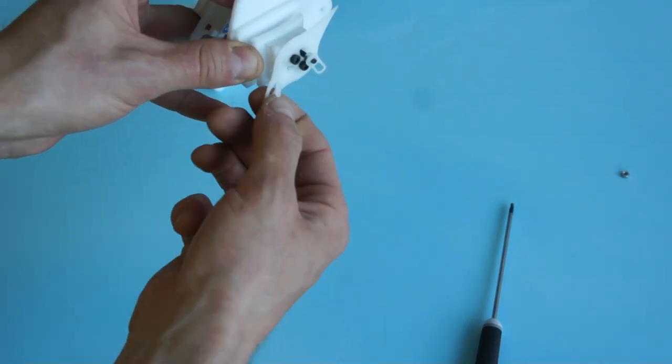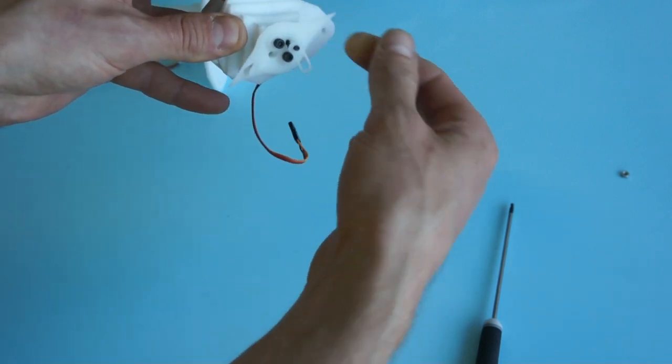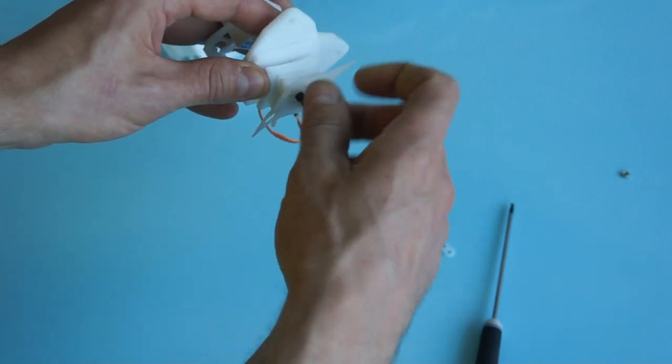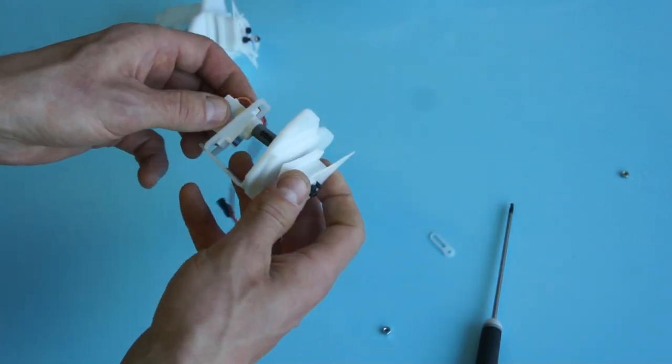I could just bend up the other peg as well and use that one, like so. But I think I'll just move over the shaft to the other hole.